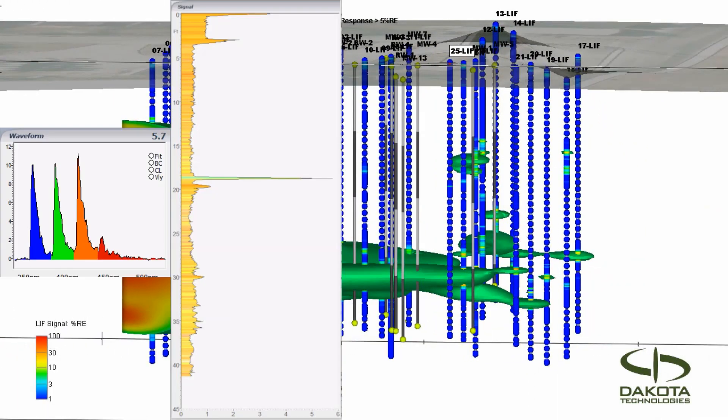This log shows LNAPL only in a thin lens at about 18 feet. The rest of the response is natural background.